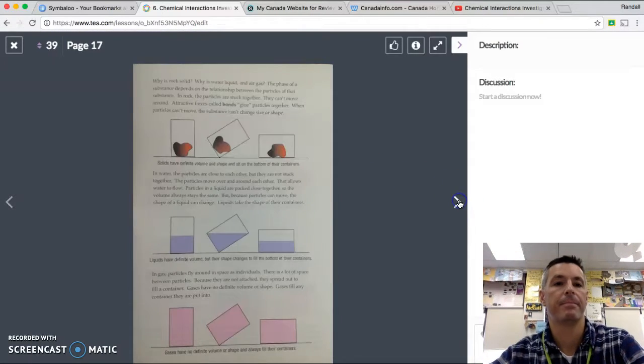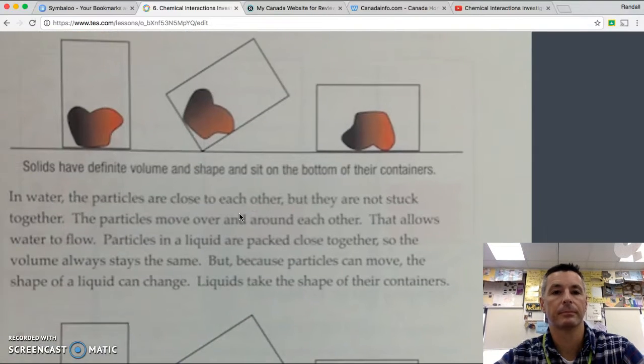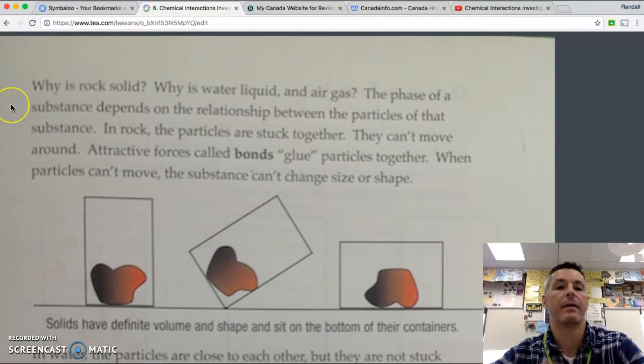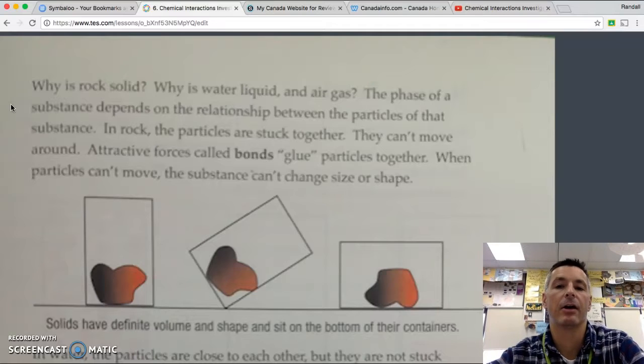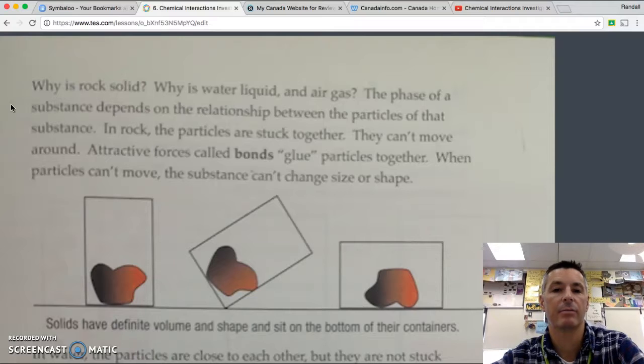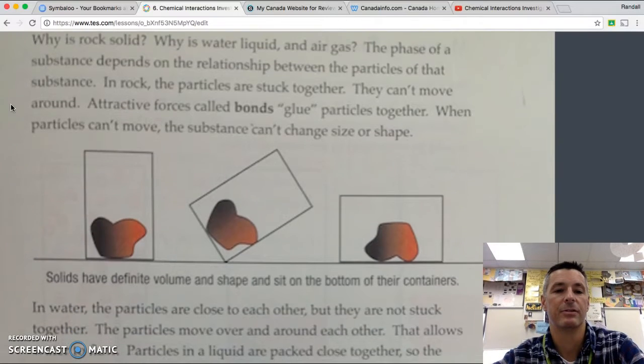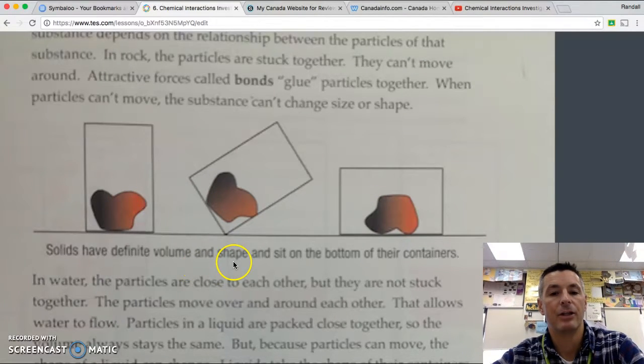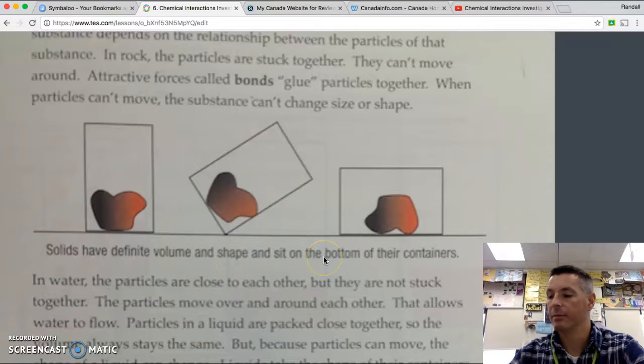Next page. Why is rock solid? Why is water liquid and air gas? The phase of a substance depends on the relationship between the particles of that substance. In a rock, the particles are stuck together. They can't move around. Attractive forces called bonds glue particles together. When particles can't move, the substance can't change size or shape. So this is a picture of a rock in a cup. Solids have a definite volume and shape, and they sit on the bottom of their containers.